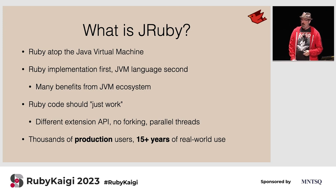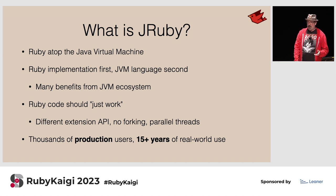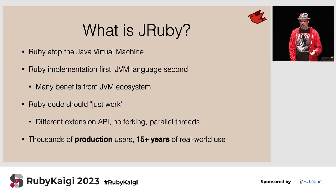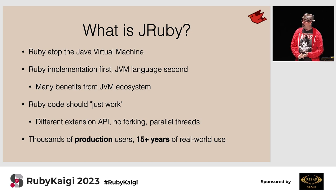We expect that any pure Ruby code out there should just work on JRuby. We have a very high level of compatibility. We do have a different extension API — we don't support C extensions that regular Ruby does, we don't support forking because the JVM doesn't do it, and we do have parallel threads. JRuby has been in use for a long time, over 15 years in production, with thousands of companies all over the world.